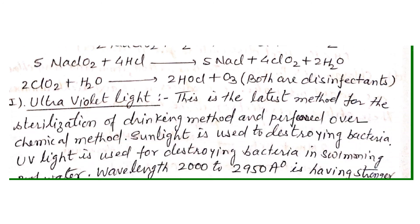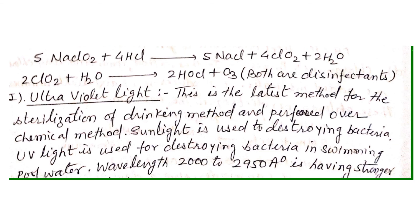The last and safest method is ultraviolet light. This is the latest method for sterilization of drinking water and is preferred over chemical methods because no harmful chemicals or gases are introduced — only sunlight is used, which destroys the bacteria. The wavelength of the sunlight used is 2000 to 2915 Ångströms, and it has a strong bactericidal action.